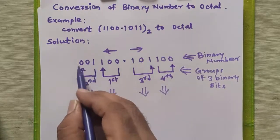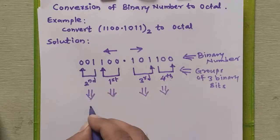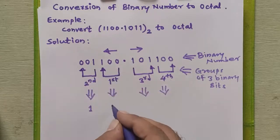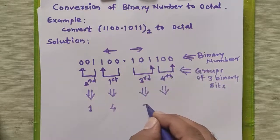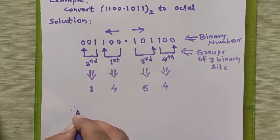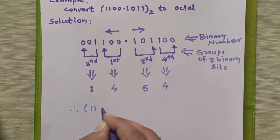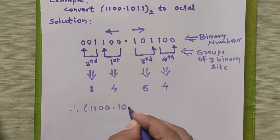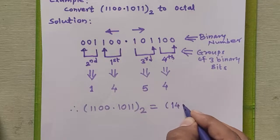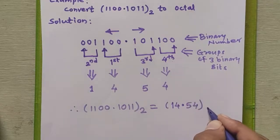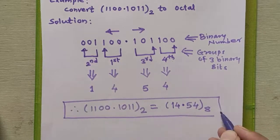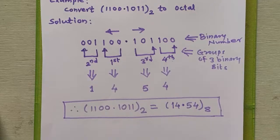The decimal/octal equivalent for 001 is 1, for 100 is 4, for 101 is 5, and for 100 is 4. Therefore, we can say that 1100.1011 binary is equal to 14.54 in octal. This is how we can convert any binary number to octal.